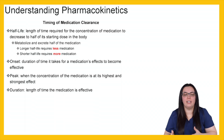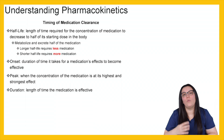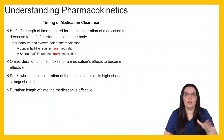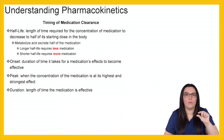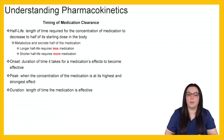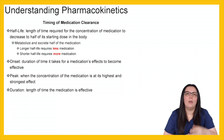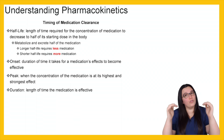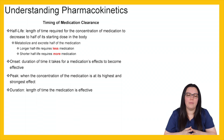To understand medication clearance, we need to understand the timing — and there are four concepts: half-life, onset, peak, and duration. Half-life is the length of time required for the concentration of medication to decrease to half of its starting dose in the body. A longer half-life requires less medication, and a shorter half-life requires more medication. Onset is the duration of time it takes for a medication's effect to become effective. Peak is when the concentration of medication is at its highest and strongest effect. Duration is the length of time the medication is effective.